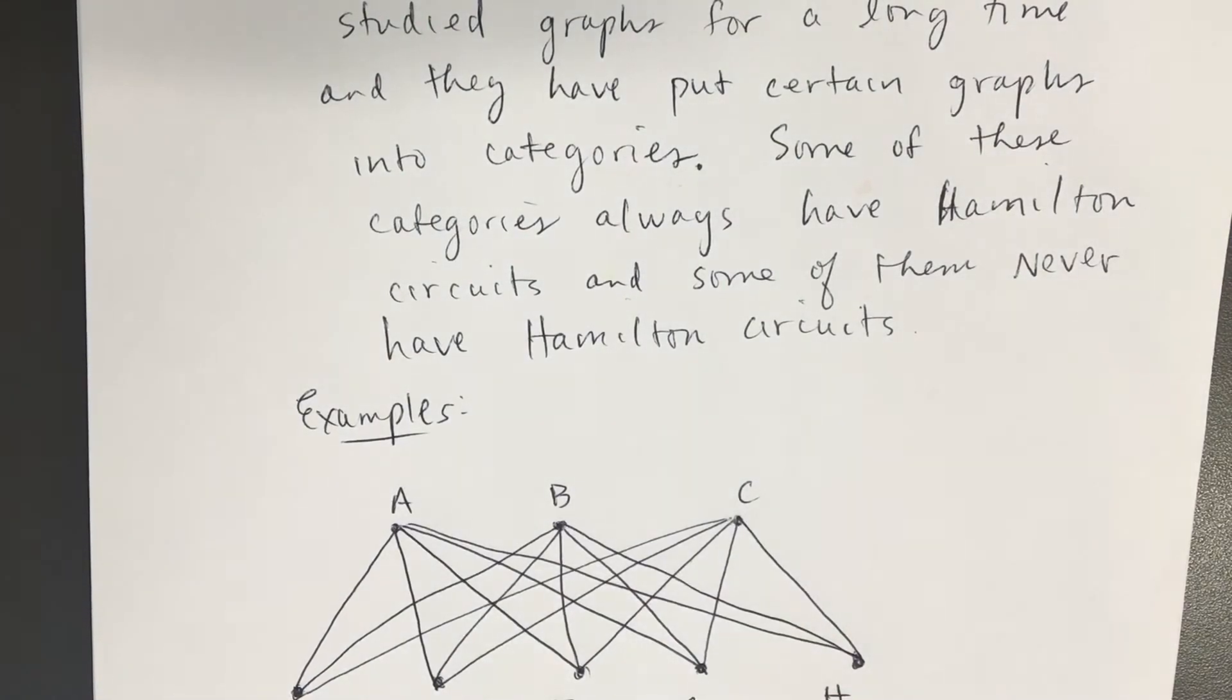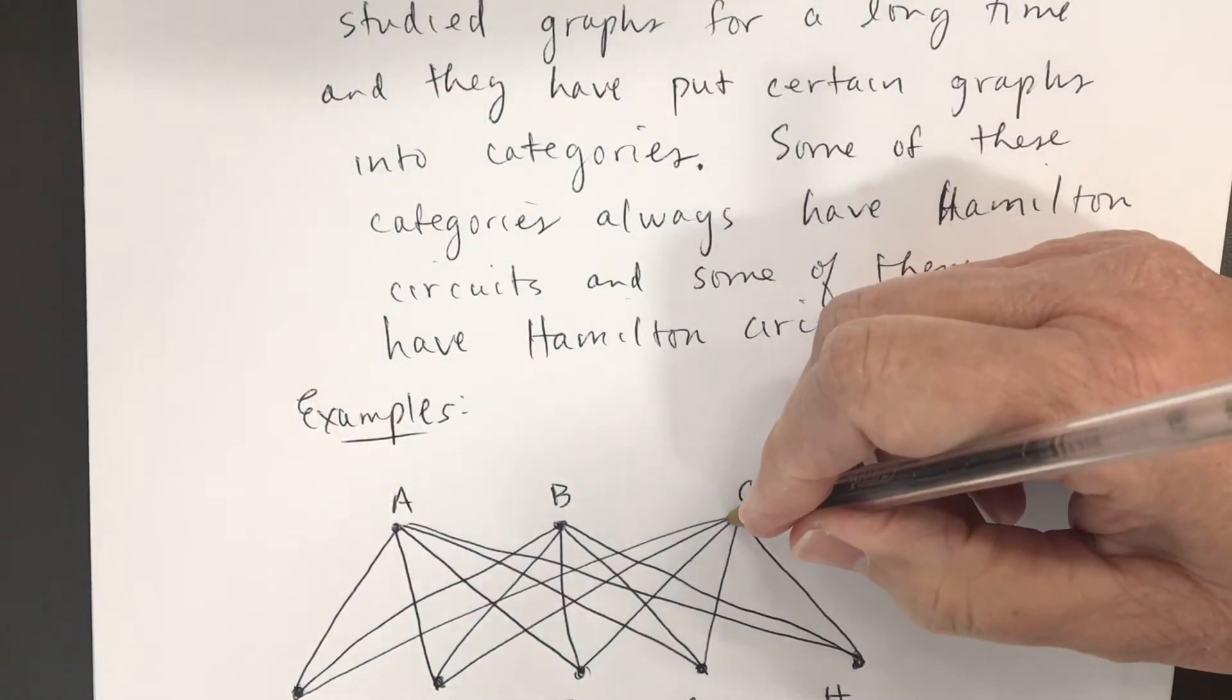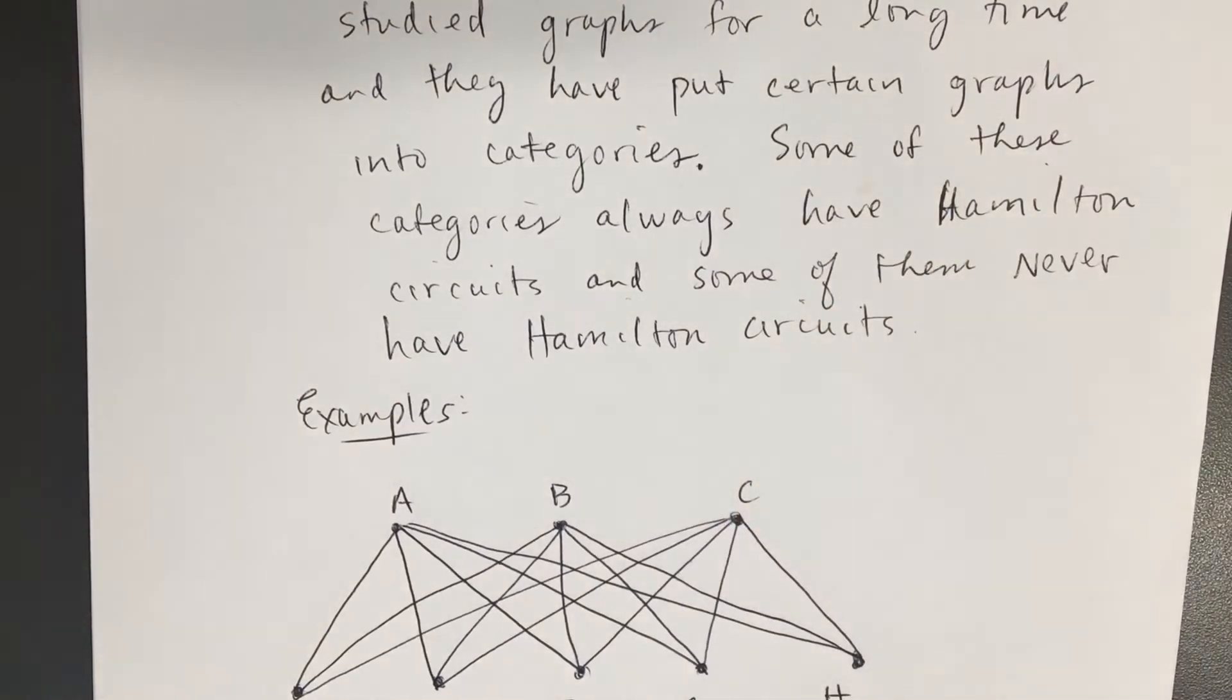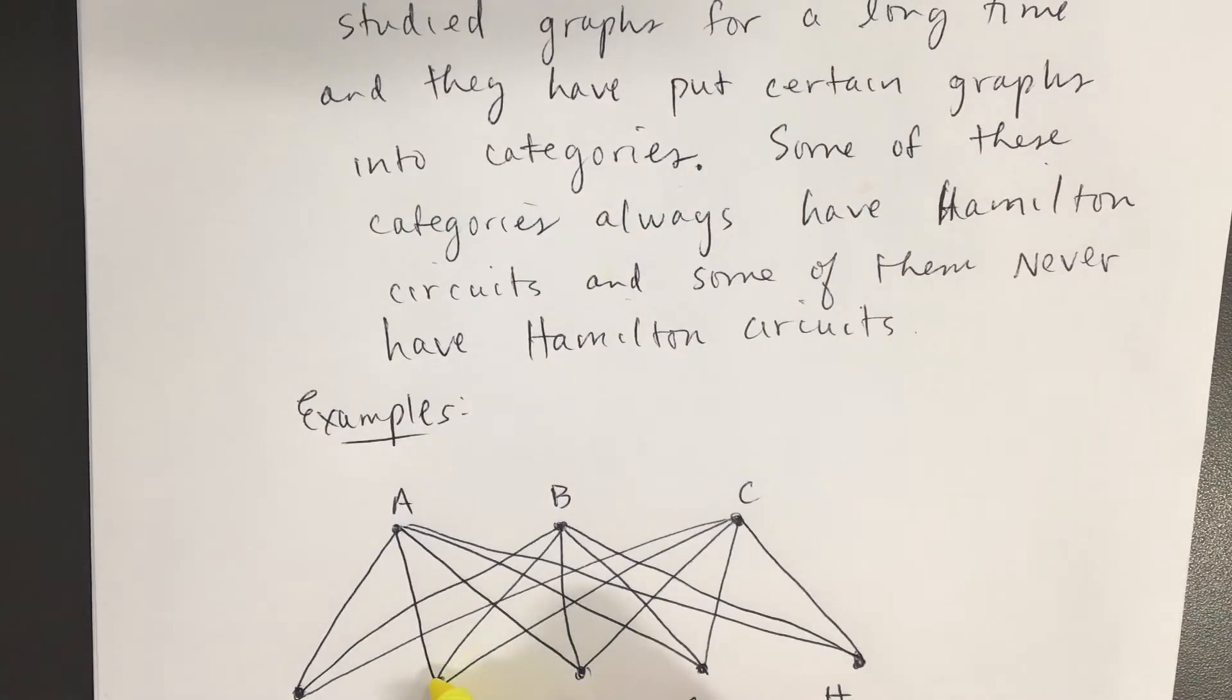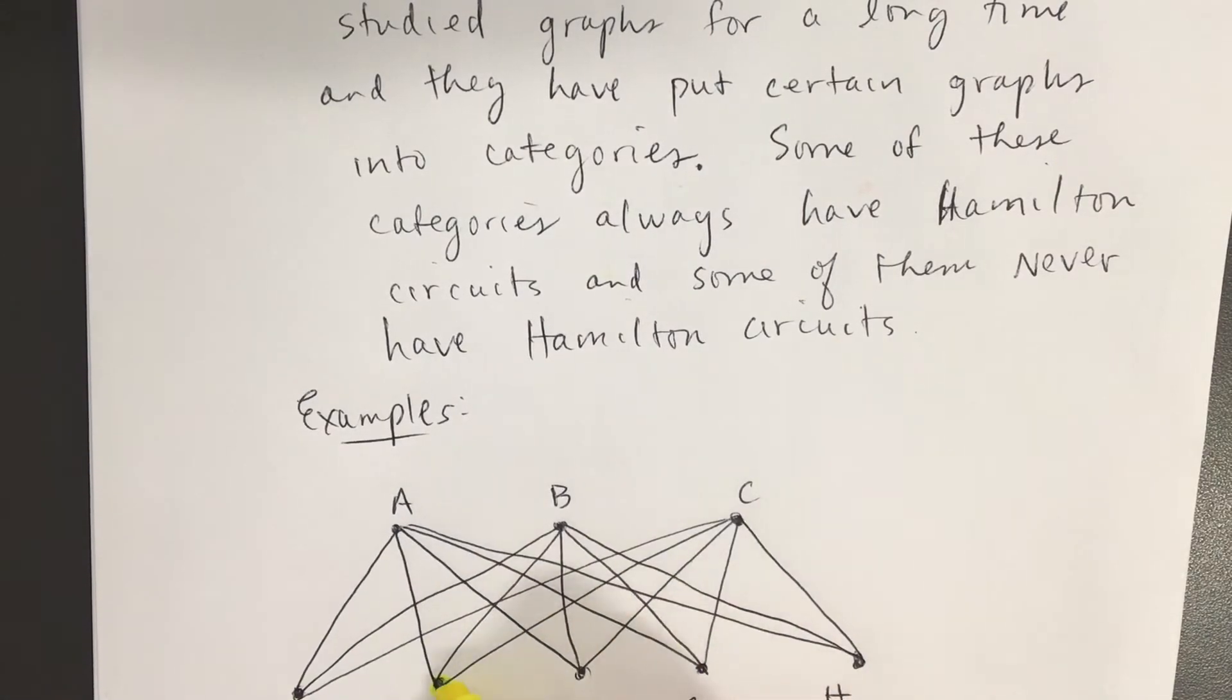So there's this type of graph. And if I try to find a Hamilton circuit, I'll start at the bottom. I'll start at E. You can go to any of the A, B, C. I'm going to go to C.